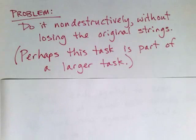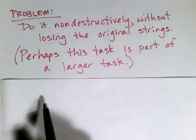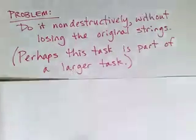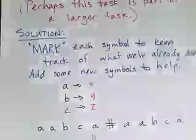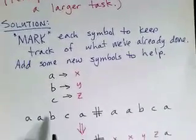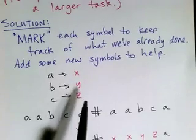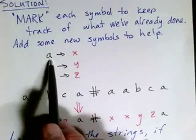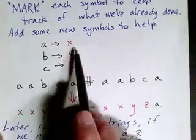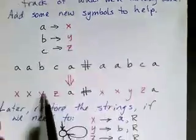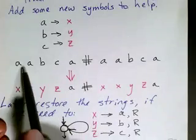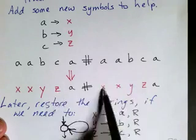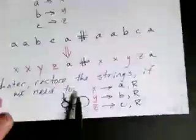Now if this is going to be part of a larger Turing machine, we'd like to be able to do this task non-destructively, without turning the original strings into x's. We don't want to lose that original data. So what we're going to do is we're going to use a slightly different technique, where we mark each symbol, but we're going to use different symbols to do the marking, so that we're not going to lose the information of what was there originally. So we're going to add some new symbols. Remember our input alphabet had a, b, and c in it, so we're going to use three new symbols, x, y, and z, for each one of those. And the idea is, instead of turning everything into an x, we're going to turn a's into x's, we're going to turn b's into y's, and c's into z's. And then later, after we're all done, we can restore the strings, if we're going to be needing them later in the algorithm.